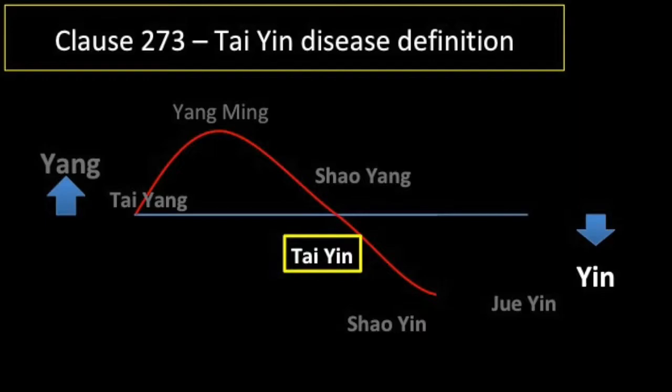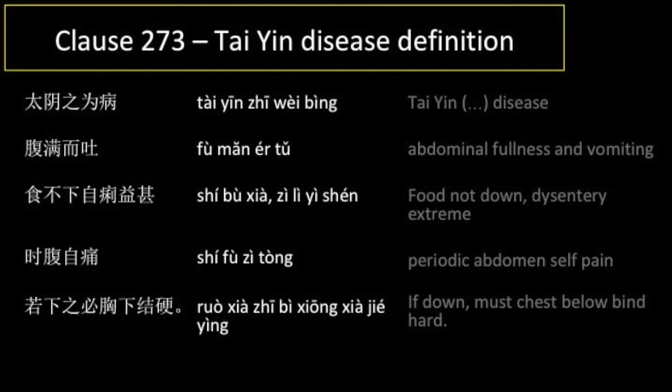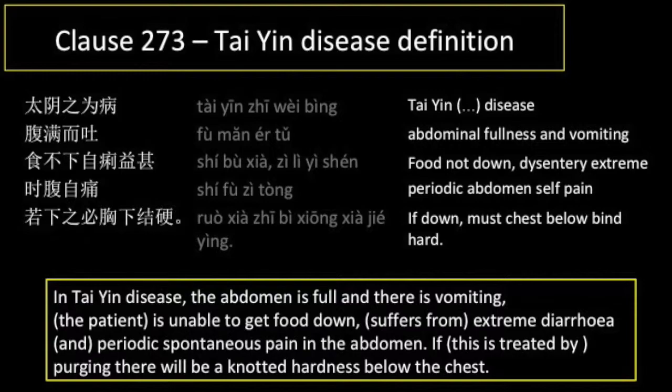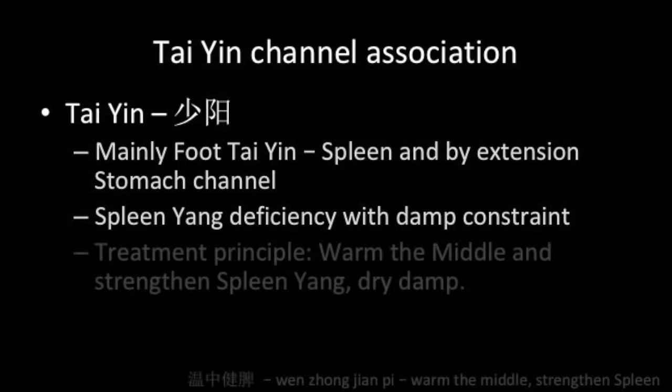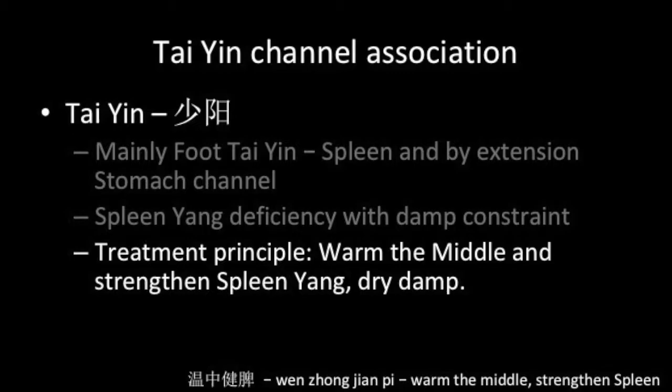Clause 273, Taiyin channel disease definition: Taiyin zhi wei bing, fu man er tu, shi bu xia, zi li yi shen, shi fu zi tong. In Taiyin disease, the abdomen is full and there is vomiting; the patient is unable to get food down, suffers from extreme diarrhea, and periodic spontaneous pain in the abdomen. If this is treated by purging, there will be a knotted hardness below the chest. The Taiyin channel considered here is the foot Taiyin or spleen channel, and by extension the stomach channel. Insufficient yang qi inhibits correct functionality of the stomach and spleen, and the spleen is impeded by dampness. The treatment principle is to warm the middle, strengthen spleen yang, and dry damp. The representative formula is Li Zhong Wan.